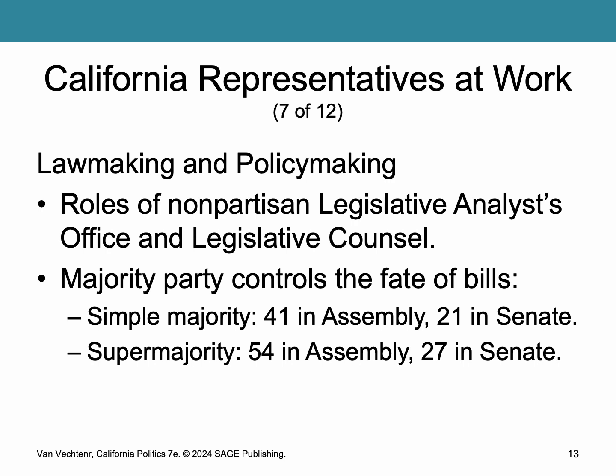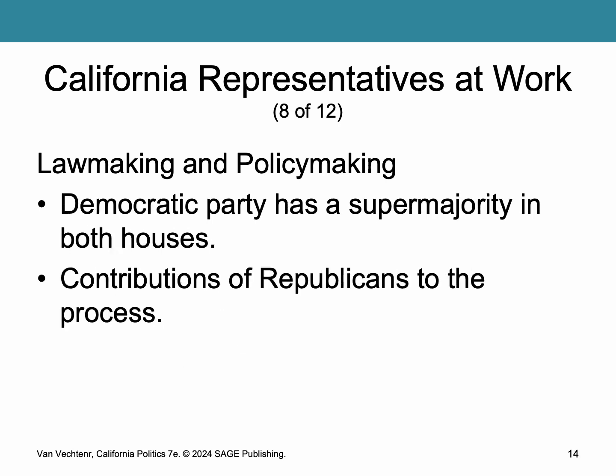The majority party controls the fate of bills. A simple majority — 41 in the Assembly and 21 in the Senate — is all that's needed to pass most bills, meaning the majority can enact its agenda without being held hostage by the minority. A supermajority is 54 in the Assembly and 27 in the Senate, putting Republicans in a discouraging position. However, Republicans still contribute by keeping the majority accountable through pointed committee questions, floor debates, shaping bills to attract consensus, and publicly challenging the majority's actions.